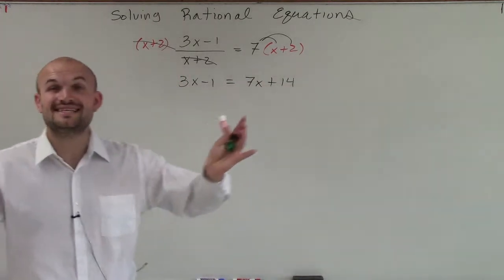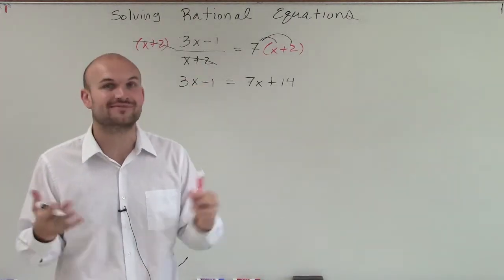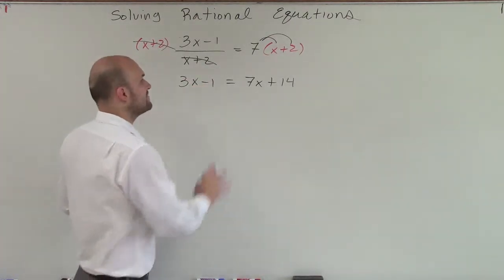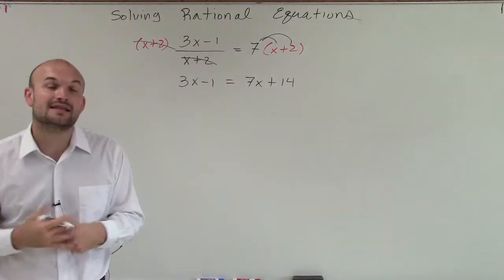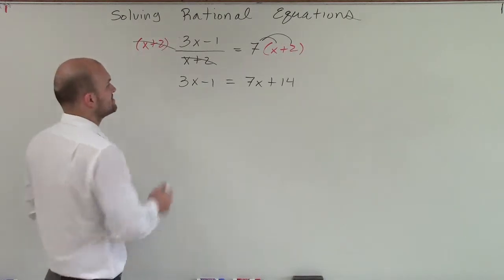Now I have x's. They're at least out of the denominator. I eliminated my rational expression, which is good. But now we just have a multi-step linear equation that we just need to solve for. So remember to do that, I need to get my variables on the same side.